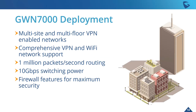The GWN 7000 deployment is ideal for multi-site and multi-floor VPN-enabled networks. Being able to create a virtual private network for businesses to exchange data has big benefits. It supports up to 300 APs, making it great for mid-range or multi-building deployments. It has super fast speeds of 1 million packets per second routing for reliable data transfer, and of course firewall features for maximum security — especially important in a VPN environment.